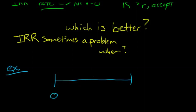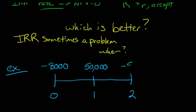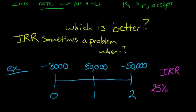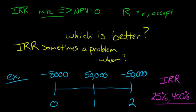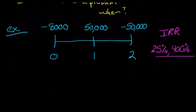When we calculate the IRR for this project with alternating cash flows, we actually get two different solutions: 25% and 400%. Having multiple IRR solutions is a problem because our decision rule requires comparing one rate to the discount rate. Two rates don't help us make a clear decision.